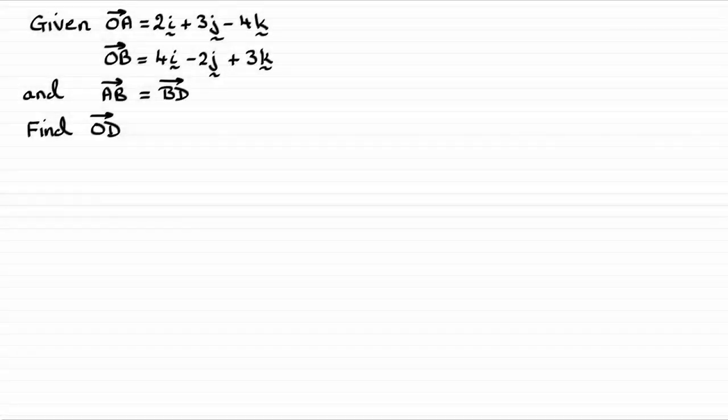Okay, so for this question we're given the position vectors of A and B, and also told that the vector AB equals the vector BD, and we've got to find the position vector of D.